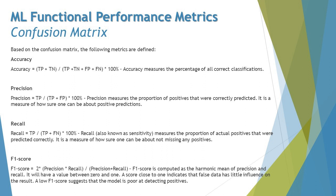Accuracy is calculated as (TP + TN) divided by (TP + TN + FP + FN), multiplied by 100, giving you the percentage accuracy. Accuracy measures the percentage of all correct classifications — true positives and true negatives across all results. Precision is measured as TP divided by (TP + FP), multiplied by 100.